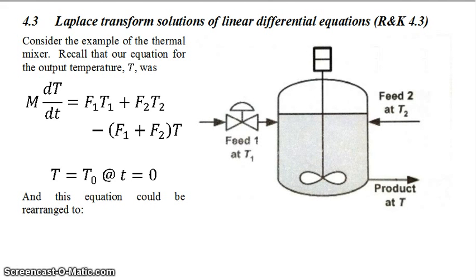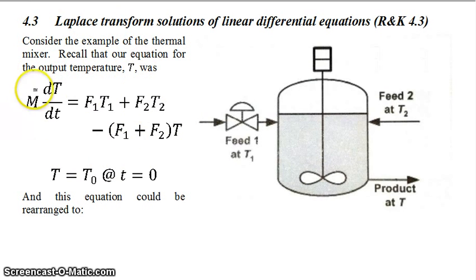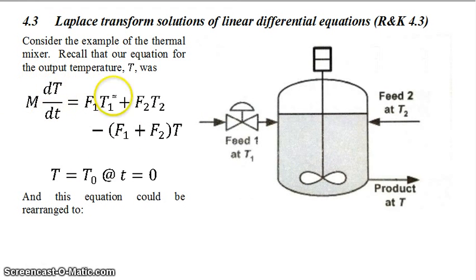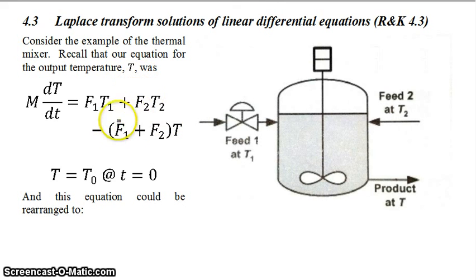Consider again the example of the thermal mixer. Recall that our energy balance for this scenario is: the mass times the time derivative of the temperature is equal to the flow times the temperature coming in stream 1, plus the flow times the temperature coming in stream 2, minus the sum of those two flows all times the outlet temperature.